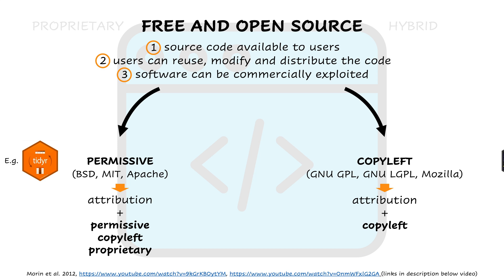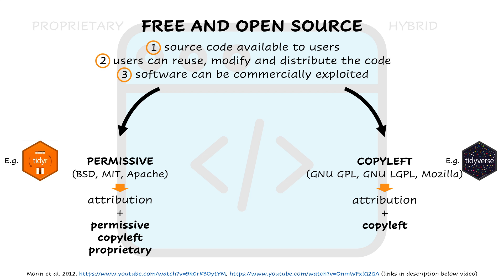For example, Tidyverse, a collection of R packages for data science, has a GNU GPL license. This means that anybody using, modifying, or extending Tidyverse will have to release their code with a GNU GPL license as well, to guarantee a cascade of open code.